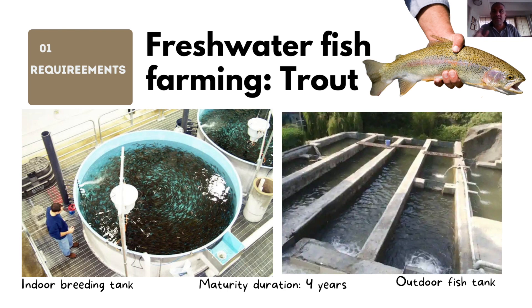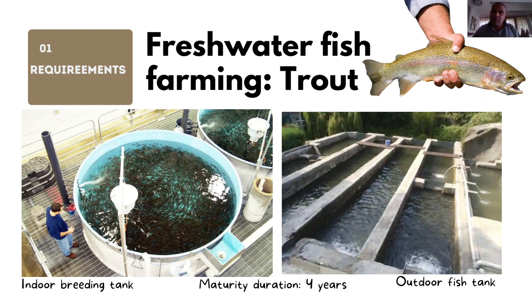The dams in Himachal Pradesh are actually the largest producers of fish, but trout farming can only be done where the water is very cold. Only a few states - Jammu and Kashmir, Himachal Pradesh, Uttarakhand, and some northeastern states - can grow trout because it requires cold water. Trout farming begins with growing fingerlings, which are very small fish. They must be reared in special indoor tanks to keep the temperature, feeding, and aeration under control.